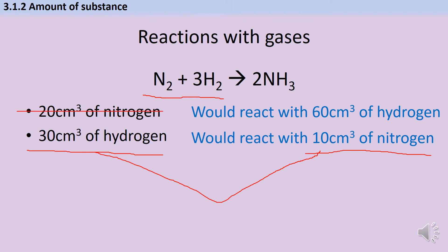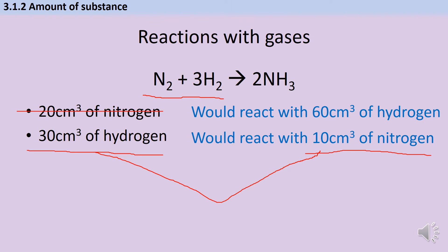My first step is just identifying that hydrogen is limiting, and it's only going to react with 10 cm³ of nitrogen — those are the numbers I need going forward. Before we continue, let's check you've understood working out which reactant is limiting, especially when coefficients are involved. Pause the video and work out what volume of the other reactant each of these chemicals could react with in an ideal world, then figure out which one is limiting.